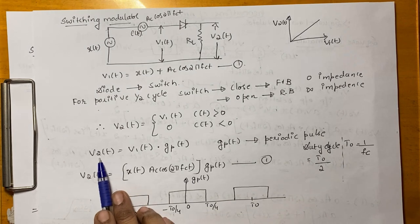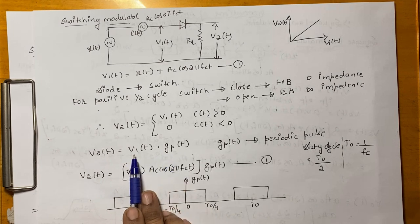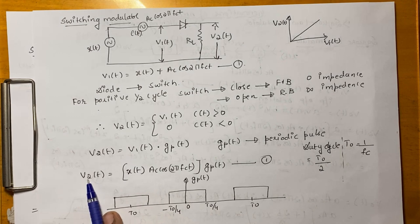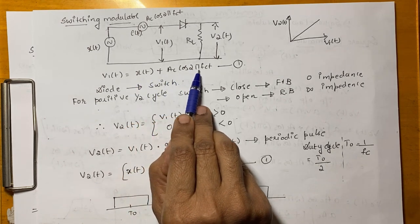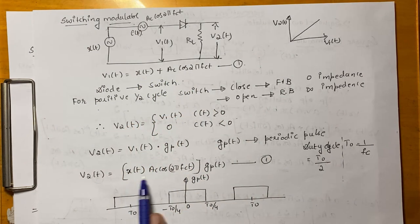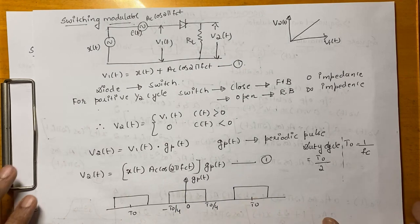Now we are having V2(t) = V1(t) into GP(t). Now, substitute V1(t). Therefore, this V2(t) is equal to what is V1(t)? V1(t) is nothing but X(t) + AC cos(2π FCT). Substitute that one that is V1(t) into GP(t). Name this as equation 1.